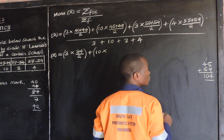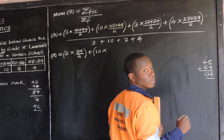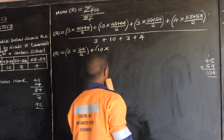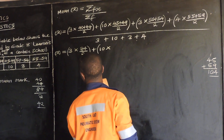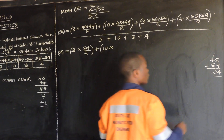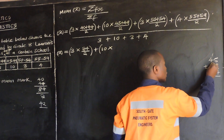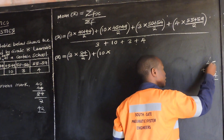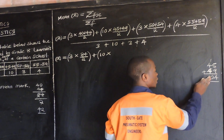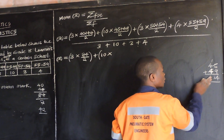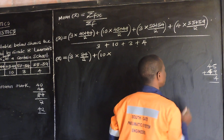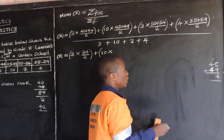Excuse me, sir — is it not 49? 45 plus 49? Okay, thank you for that, thank you Eric. So this one is supposed to be 49, not 59. Very good, thank you for that correction.